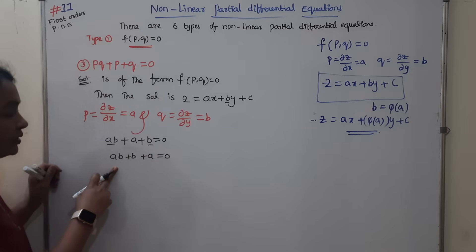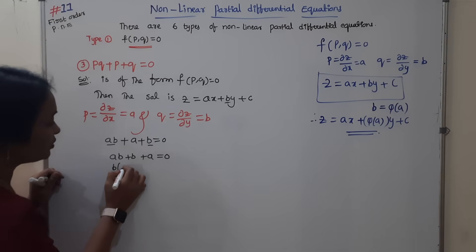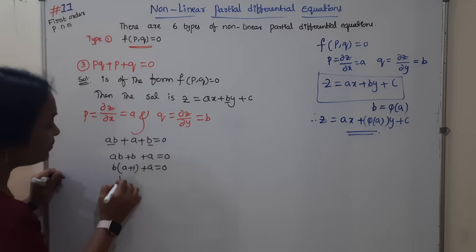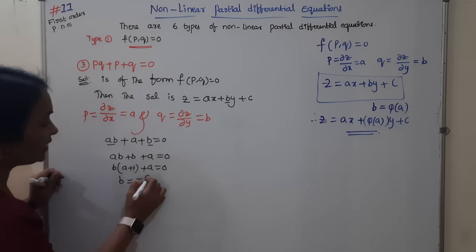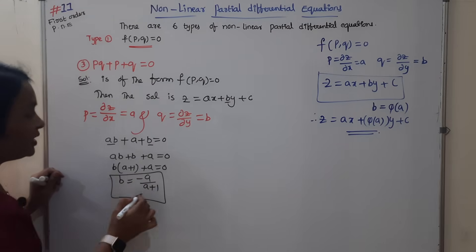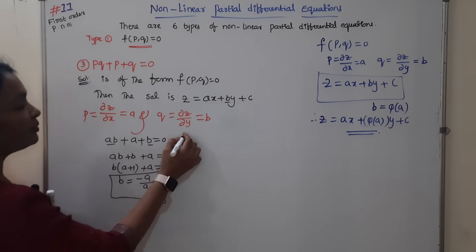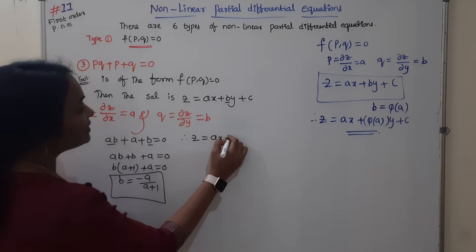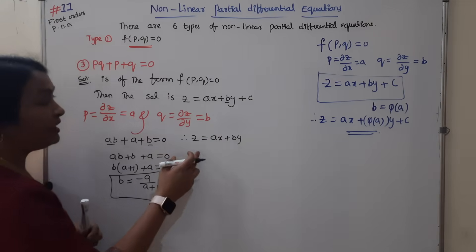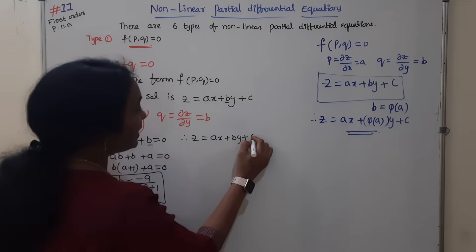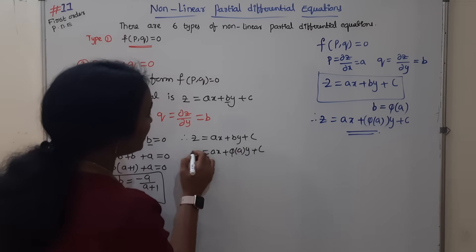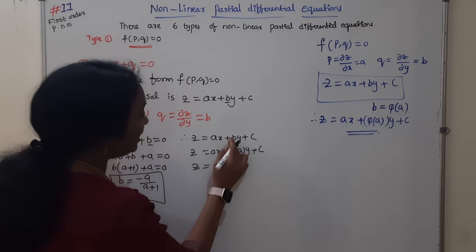Here, b is common. We will get the b value. a + 1 + a = 0, and if b = a, then minus a. This gives us the b value. Now, for the general solution, z = ax + b·y = ax + φ(a)·y + c, where by is written as φ(a)·y + c.